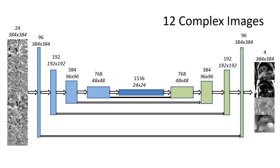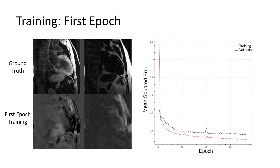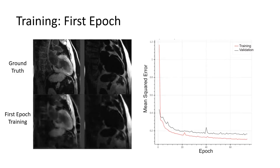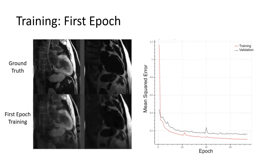Next, U-Net was trained with 12 complex images to perform water-fat separation. For different inputs, the CNN was trained for 75 epochs; mean square error effectively plateaued after 20 epochs. A video showing training during the first epoch demonstrates that the CNN is well suited for the water-fat separation problem — at the end of the first epoch results are already quite good, with refinements and resolution realized during subsequent training.